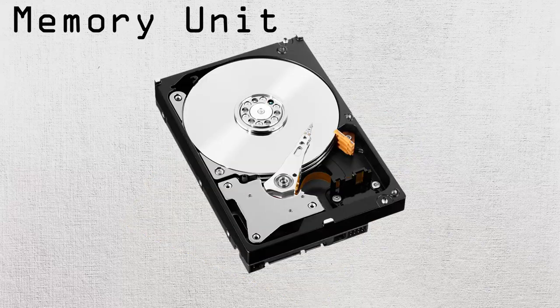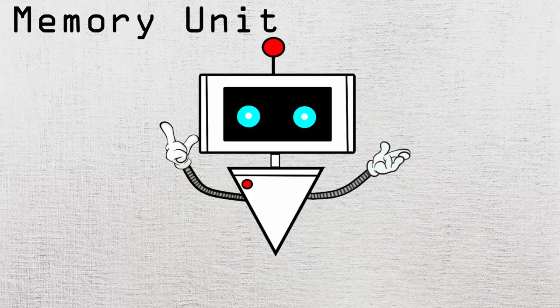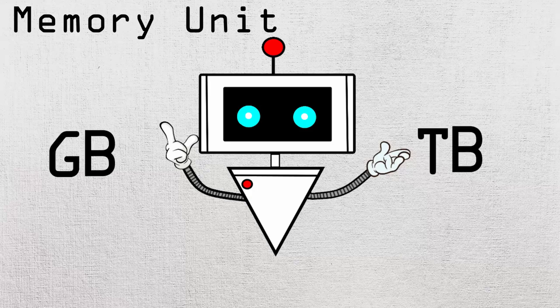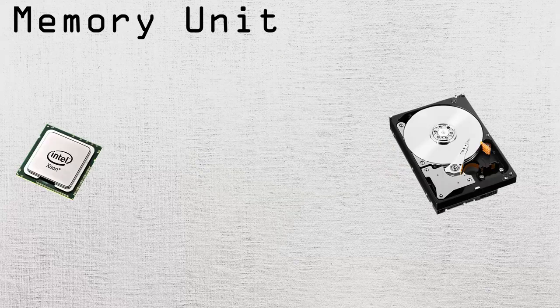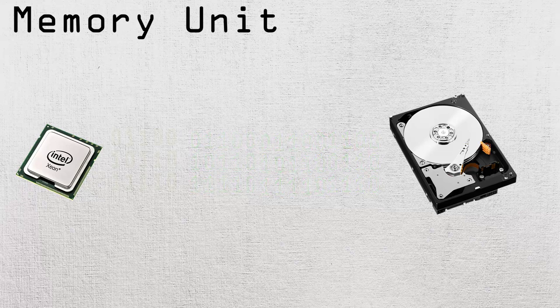The final form of memory is the hard drive. This is the long-term memory of the computer and can store lots of information, usually in gigabytes or terabytes. It is located further away from the CPU, meaning that it takes the longest for information to travel compared to other forms of memory.